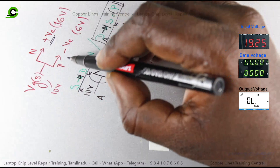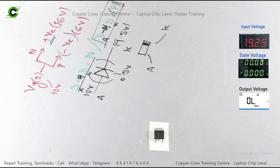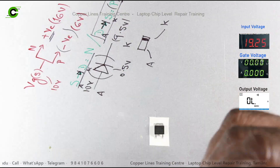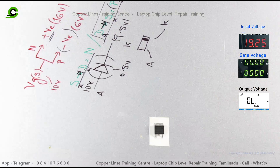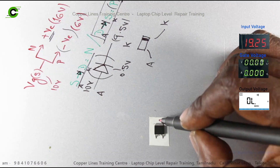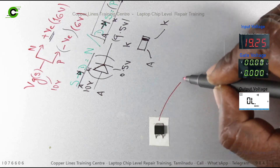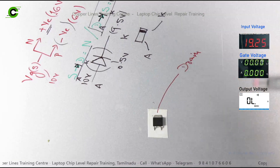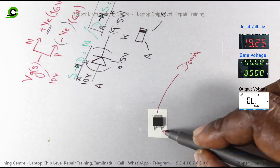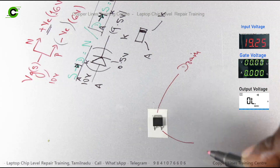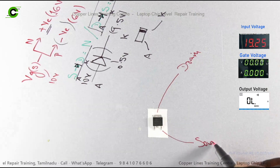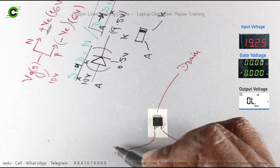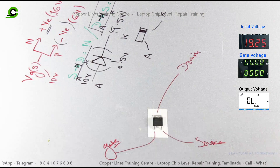For the P channel, the drain-to-source must be negative. Now we will talk about the N channel concept — what is drain, what is source, and when we talk about gate.